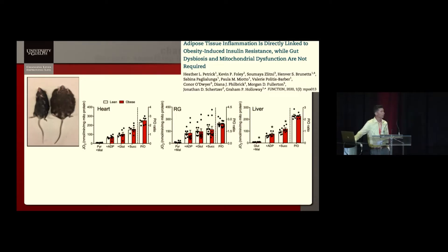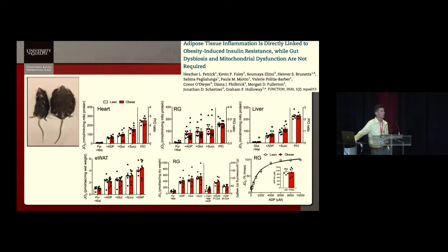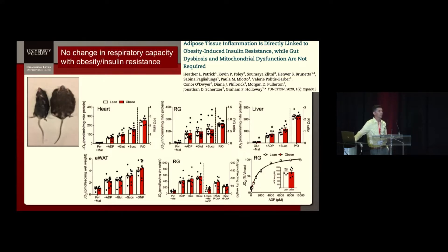I can pull out the mitochondrial respiratory function from that paper. This is isolated mitochondria from the heart, the red gastroc, and the liver. We can look at with or without ADP, glutamate, succinate, or we can look at our stoichiometry in terms of the P:O ratio as a marker of coupling efficiency. We can look at permeabilized tissues — the white adipose tissue and permeabilized fibers from the red gastroc — with and without ADP in complex 1 and 2 linked substrates, and lipids looking at suppression with malonyl-CoA, and submaximal ADP. No matter how we interrogated the mitochondria, we didn't see any change in respiratory capacity or oxidative phosphorylation across tissues, despite this being the most aggressive form of obesity and insulin resistance that I've ever seen.